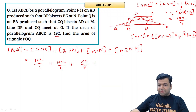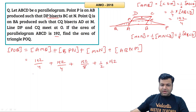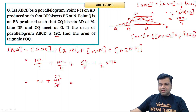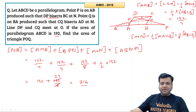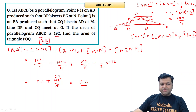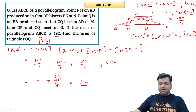Adding everything up: area of triangle POQ = 192/4 + 192/4 + 192/8 + 96 = 48 + 48 + 24 + 96 = 216. So the area of triangle POQ is 216 square units. That was the question from AIMO 2018.